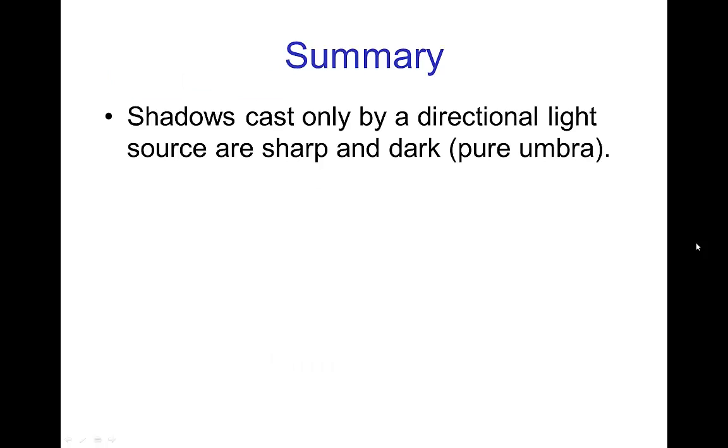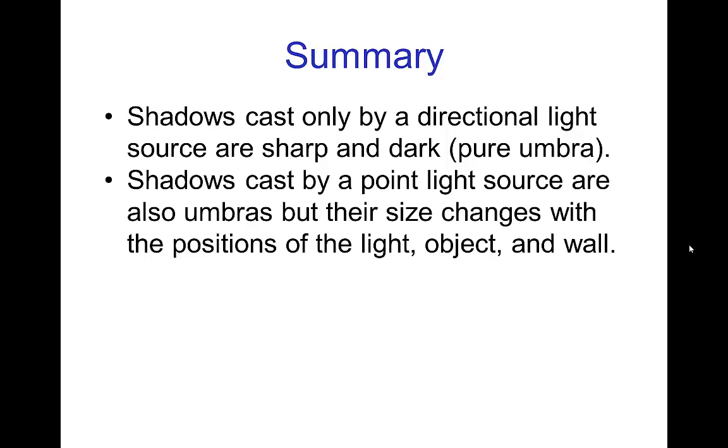In summary, shadows cast only by a directional light source are sharp and entirely umbra, so those are the very simplest types of shadows. Shadows cast by a point light source are also entirely umbra, so they have no penumbra, but their size changes with the position of the light, the object, and where the shadow is being cast.